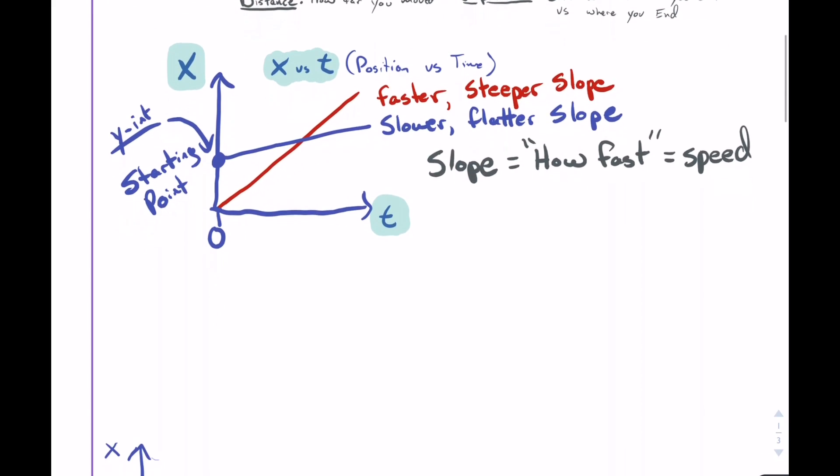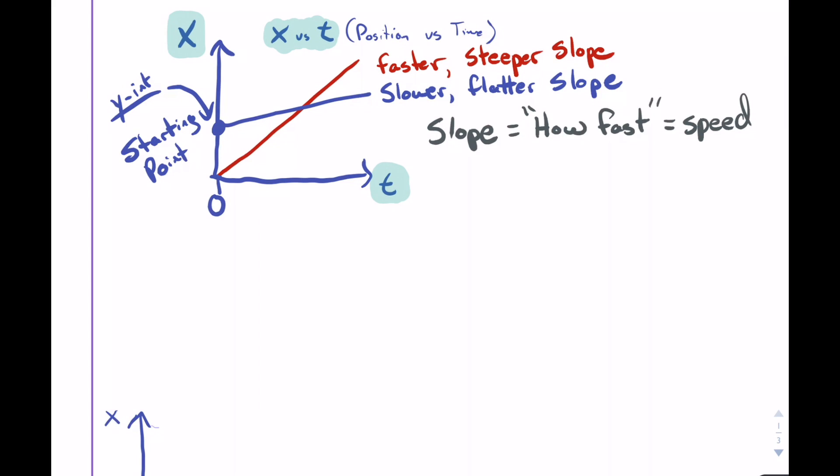Let's put a definition down then. What is speed? Speed is the rate at which distance is traveled. There are a couple keywords that I want to make sure we focus on. The first one is this idea of rate and distance.